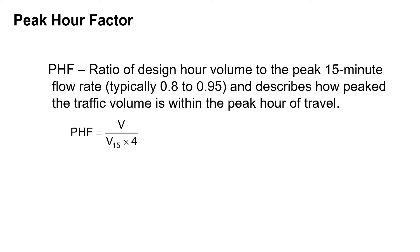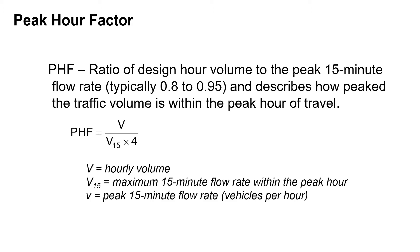The peak hour factor is equal to V divided by V-sub-15 times 4, where V is the hourly volume and V-sub-15 is the maximum 15-minute flow rate within the peak hour. We can also solve for the peak 15-minute flow rate, which is lowercase v, which equals the hourly volume divided by the peak hour factor. So you can solve it going in either direction.